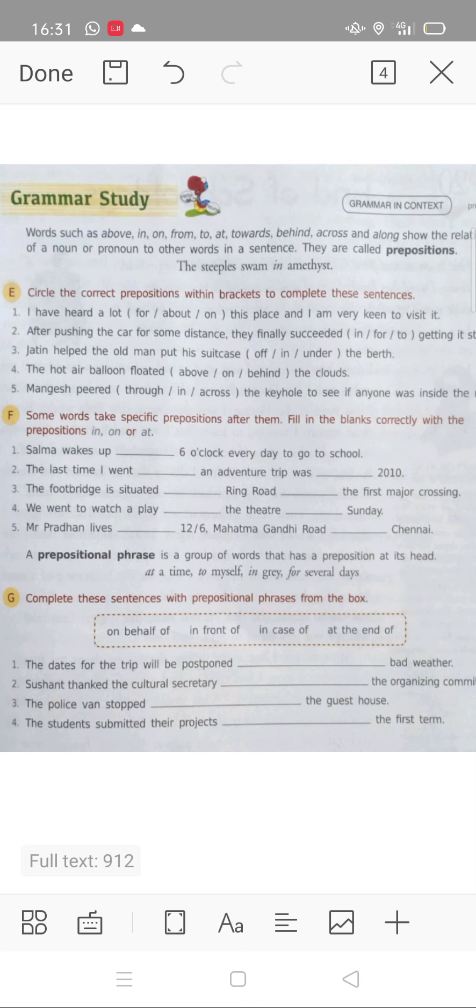In question number G, you have to do prepositional phrases. What do you have to do in this? In the bracket, you have given options: on behalf of, in front of, in case of, at the end of. These four options have been given, and there are four brackets. So you have to fill the correct word in the proper sentences, filling the blank with the correct option.